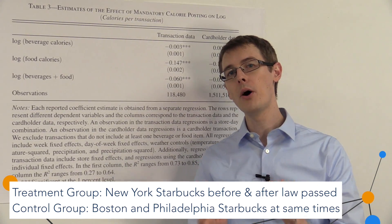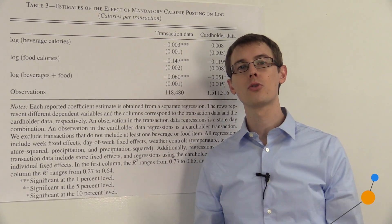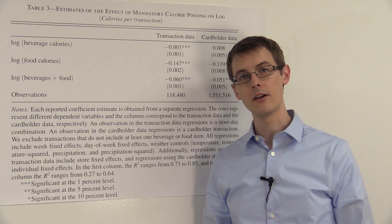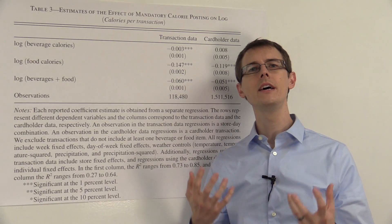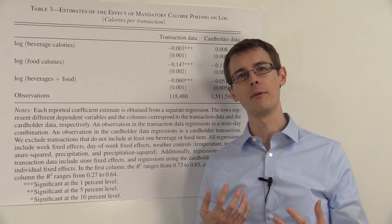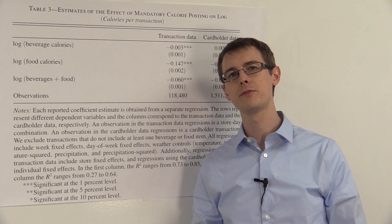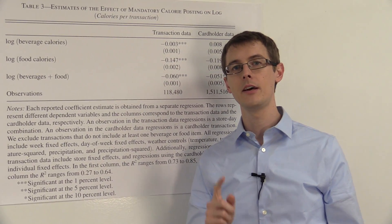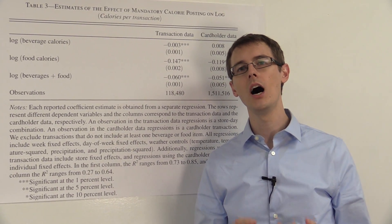So they're going to use Boston and Philadelphia as their control group. Both of those cities did not have a law that mandated restaurants post their calories. So we're in the classic difference-in-differences setup and we can apply all the ideas we've talked about to learn about the causal effect of the policy mandated calorie count posting on outcomes.